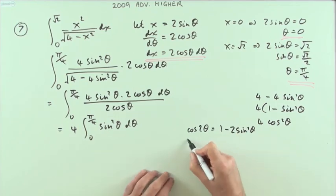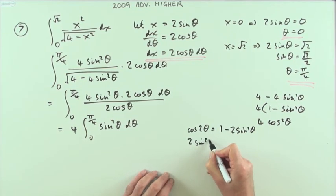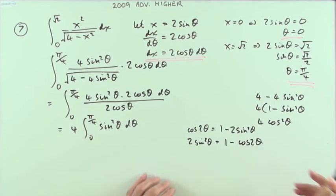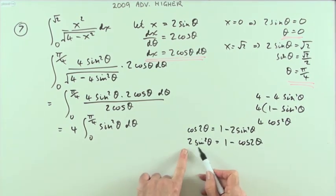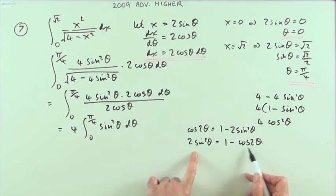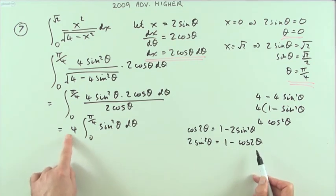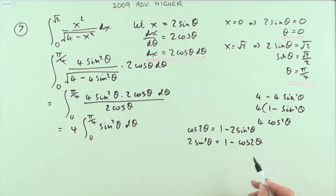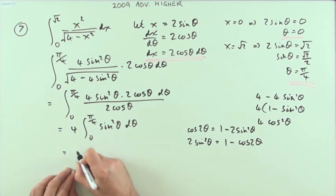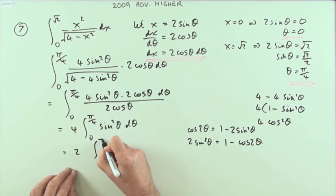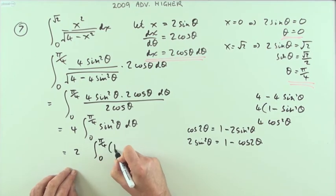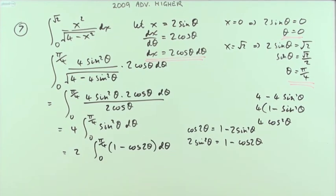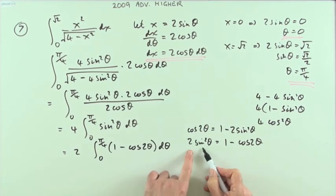But we have the double angle identity: cos 2θ equals one minus two sin squared θ. Rearranging: two sin squared θ equals one minus cos 2θ. Since I've got four of them, I can use two of these expressions, giving two times the integral from zero to π/4 of (one minus cos 2θ) dθ.